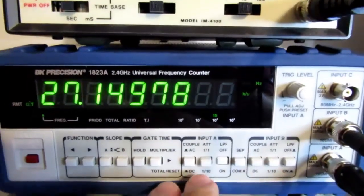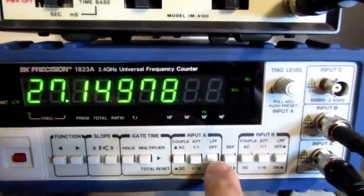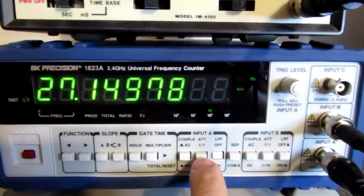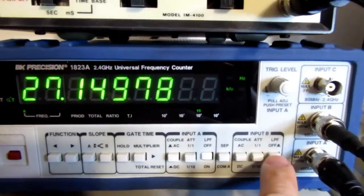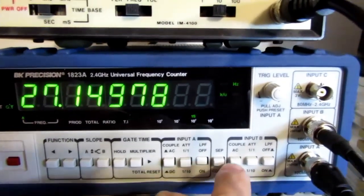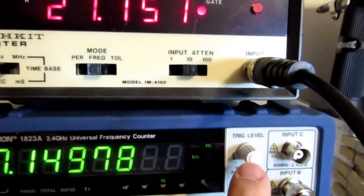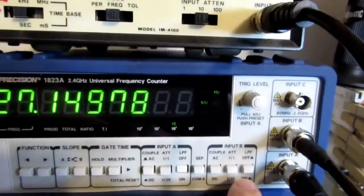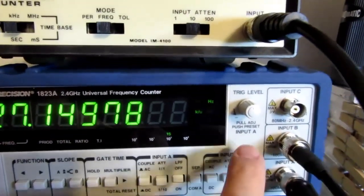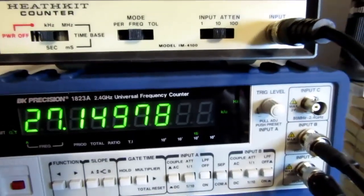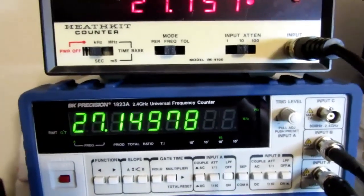The A and the B channels have AC and DC coupling. There's a one-to-one or one-to-ten attenuator on both of them and a low-pass filter that can be engaged for both of them. And there's the variable trigger level. You pull it out for one channel and push it in for the other one. I believe the nomenclature on here is not the clearest, but that's what I got from the manual anyway.